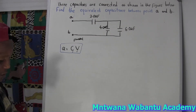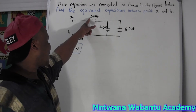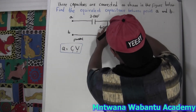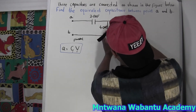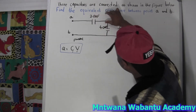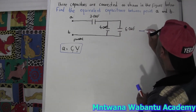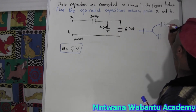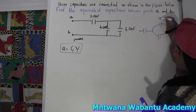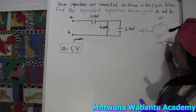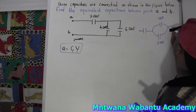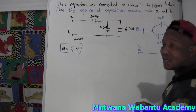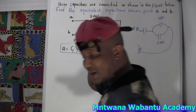Now: find the equivalent capacitor from point A to point B. This is a mixed circuit. The single capacitor here is in series with the two on the right, but those two on the right are parallel to each other. Look — this one and this one are parallel, like they share the same junction points. So I can split the diagram: we have 4 microfarads and 6 microfarads in parallel, and that combination is in series with another capacitor.